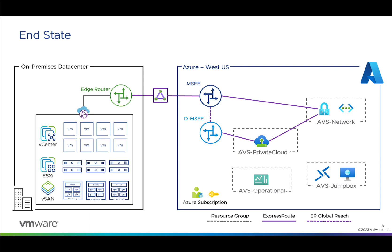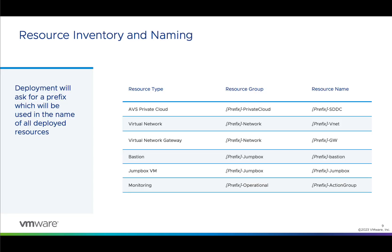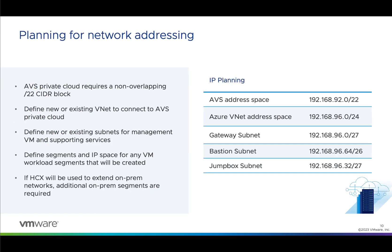This environment will be connected to our on-premises data center via ExpressRoute Global Reach using an existing ExpressRoute connection. When we use these templates for deployment, we'll need to make some decisions up front about resource naming. We'll select a prefix that will be used to generate names for the deployed resources. We'll also need a /22 block to assign to the AVS private cloud. The provisioning process will automatically carve this up into networks for private cloud management, HCX, vSAN, vMotion, ExpressRoute peering, and other uses.